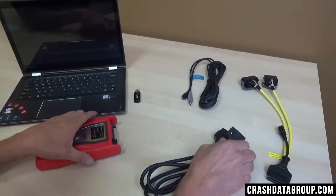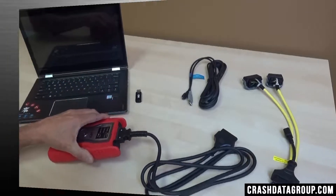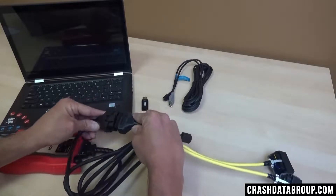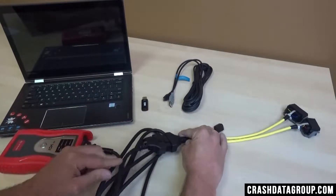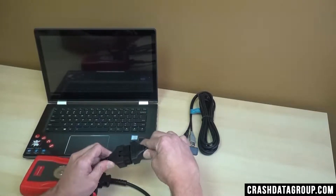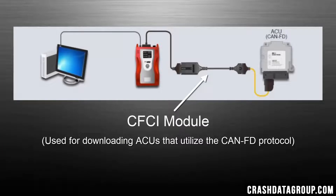Start by connecting the DLC cable to the VCI. Select any ACU adapter cable that came with your kit and connect it to the DLC cable, or use the DLC power adapter if your kit did not come with an ACU connection cable. If you have the optional CFCI module that is used to download certain Hyundai or Kia systems, connect it between the DLC cable and the ACU adapter cable as shown here.